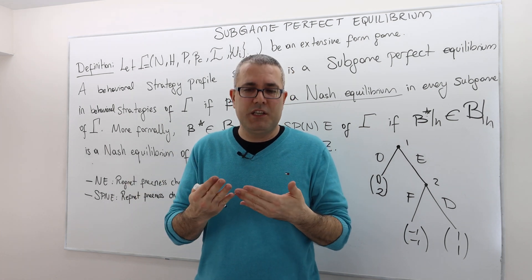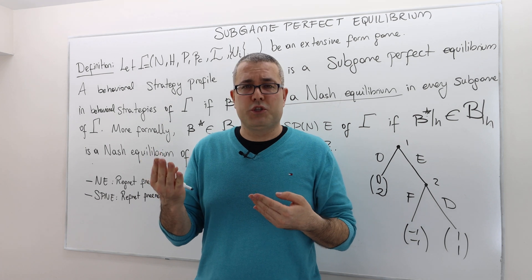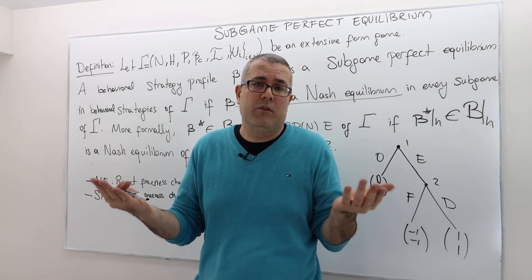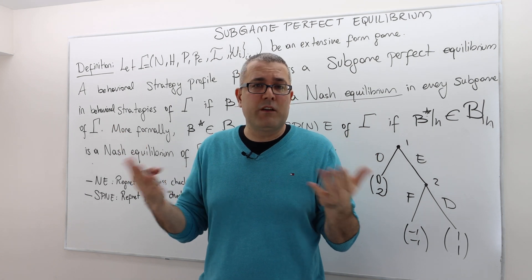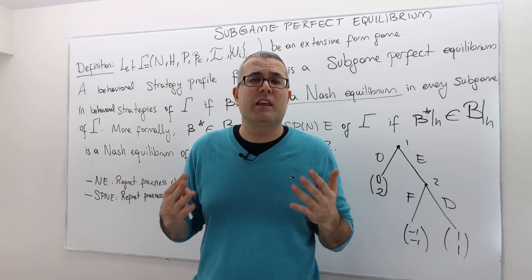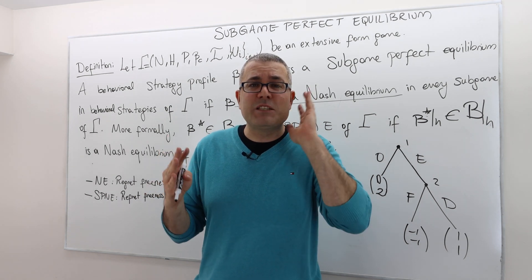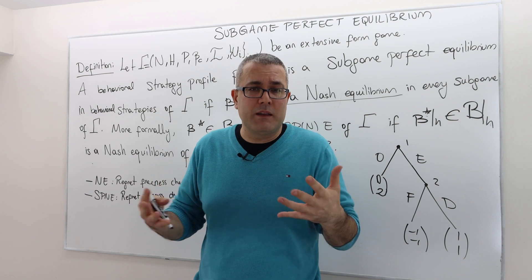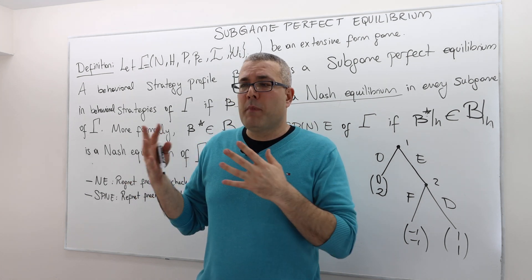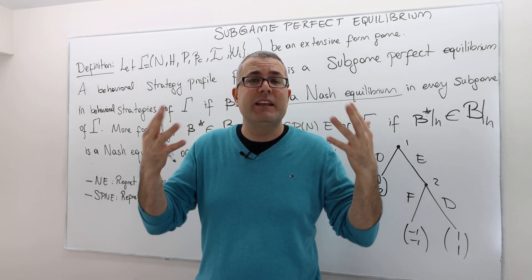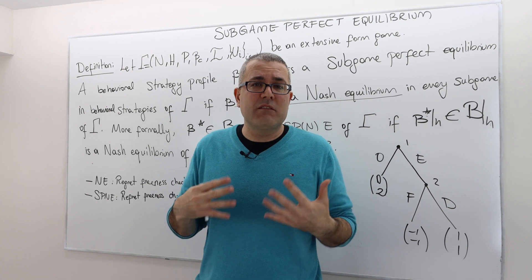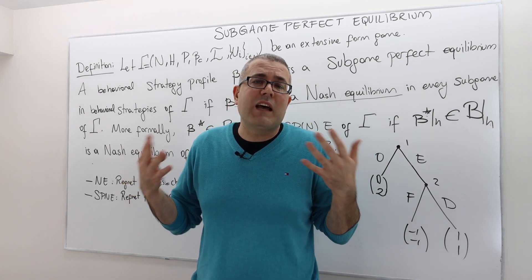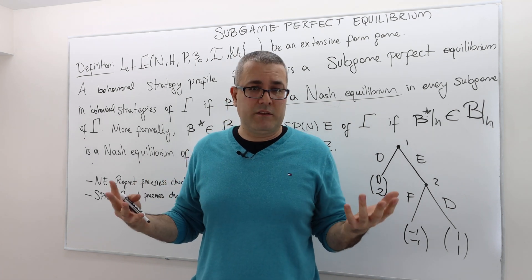Once the game is over, each player looks at his payoff and his strategy, and the other's strategy. He might say: 'I wasn't expecting my opponents to play that.' Well, too late — there's nothing I can do about it. So I'm not going to regret if my conjecture about my opponent's strategy turns out to be different than expected. But what if my opponents play exactly as I was expecting? In that case, am I going to regret? No — because I was best-responding to my conjecture, and that conjecture happened to be correct. So I did the best I could do in this game.